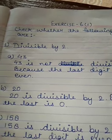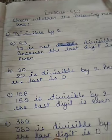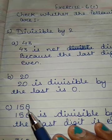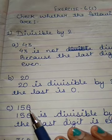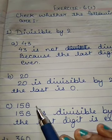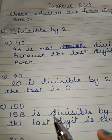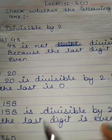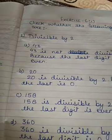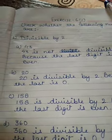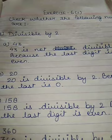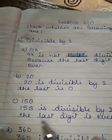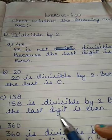Now, question number C: 158. You can see the last digit is 8. Eight is an even number, and an even number will be divided by 2. So, 158 is divisible by 2 because the last digit is even. We have to give the reason also, children, because without a reason you can't understand what we are doing. So, 158 is divisible by 2 because the last digit is even.